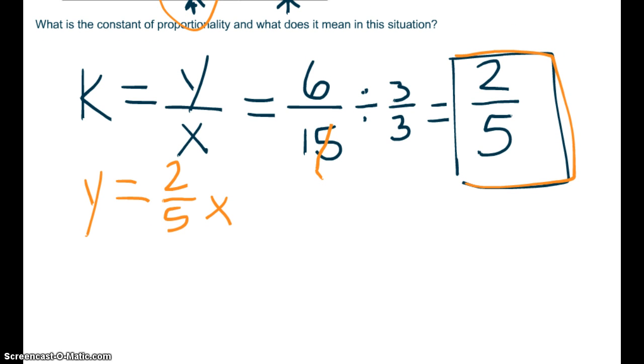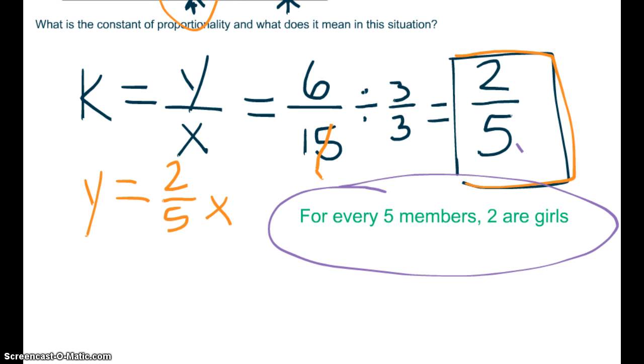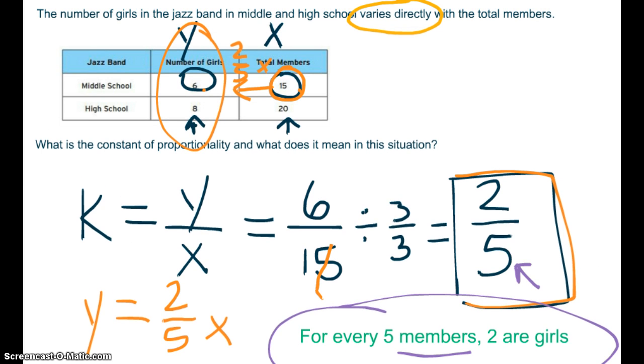Now let's figure out what that actually means. So I have it written down right here for you. For every 5 members, so 5 is our total. For every 5 members, 2 are girls. That's what our constant means in this situation. Yes, for every 15, 6 are girls. For every 20, 8 are girls. But I want you to explain to me what 2 fifths means. For every 5 members, 2 are girls.